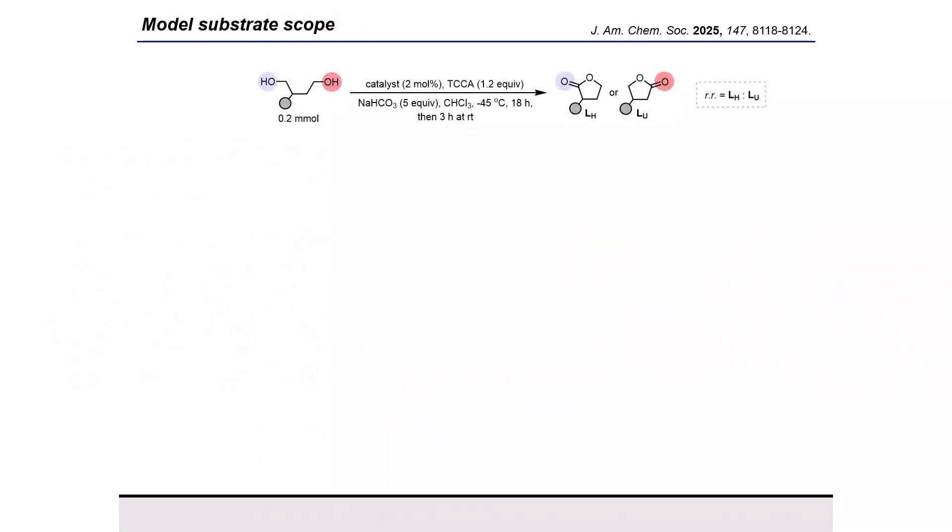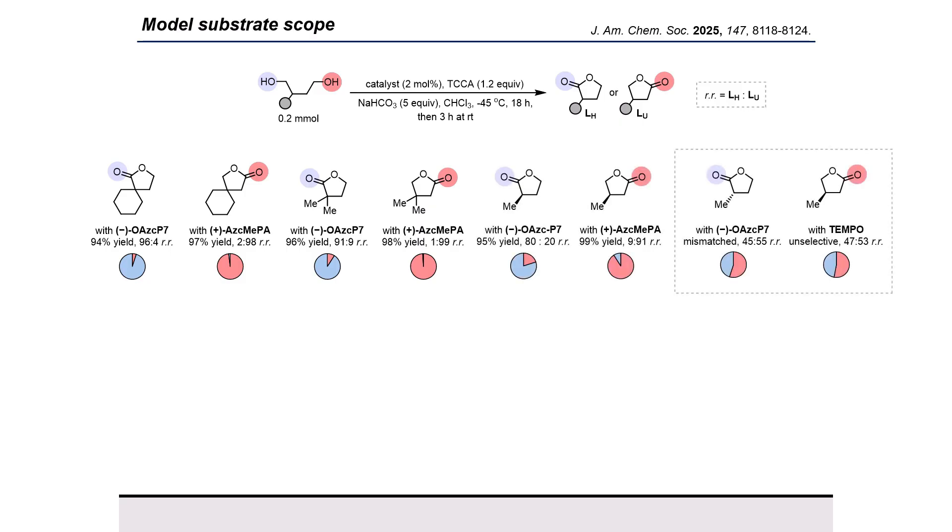With optimized catalysts in hand for both the oxidation of the more hindered site and less hindered site, we tested our method on preparative scale. Large and small dye substitution was accommodated with excellent selectivity for both the more and less hindered sites. For substrates bearing a stereocenter, we observed a strong matched mismatched effect. While the matched enantiomer of the 2-methyl diol gave an 80% selectivity for the more hindered site, the mismatched enantiomer lost all selectivity. Notably, while TEMPO is unable to differentiate between a methyl group and a proton, ASC-MEPA is able to achieve 91% selectivity for the less hindered site.